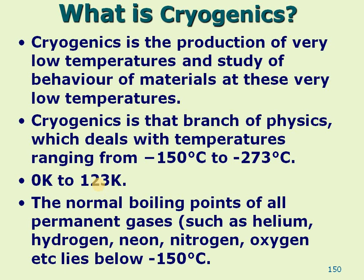The reason for this classification is that almost all permanent gases — ideal gases such as helium, hydrogen, neon, nitrogen, and oxygen — have boiling points below minus 150 degrees Celsius. The criteria is based on their boiling points.